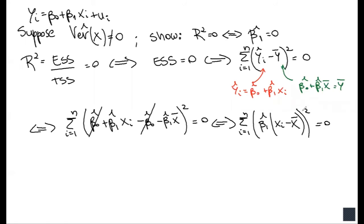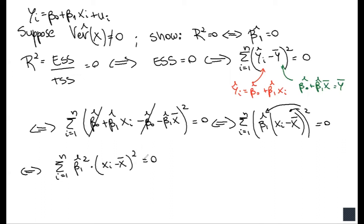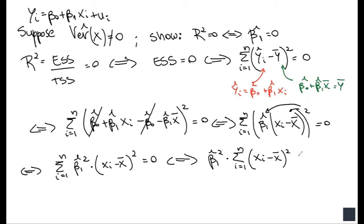We can distribute the square over the multiplication, so this becomes the sum from i = 1 to n of β̂₁² times (xᵢ − x̄)² equals zero. Now, β̂₁² is the same number for each term of the summation, so we can pull it out, giving us: β̂₁² times the sum from i = 1 to n of (xᵢ − x̄)² equals zero.